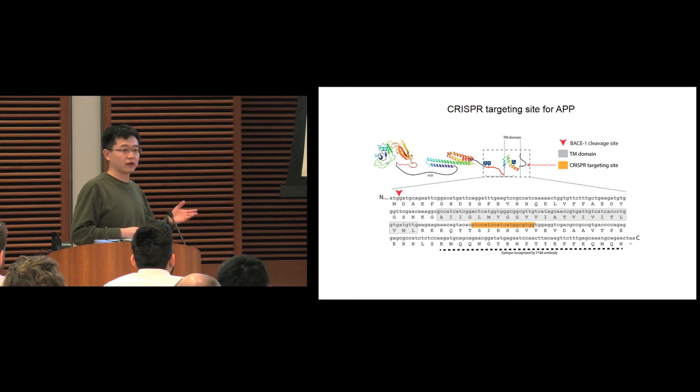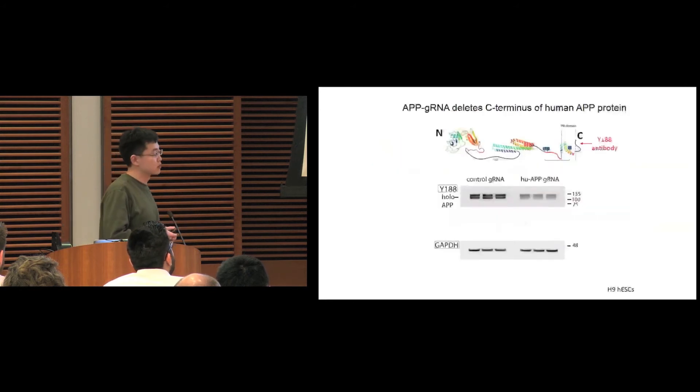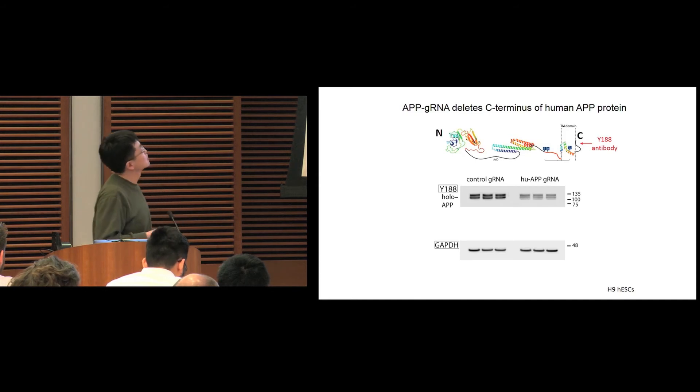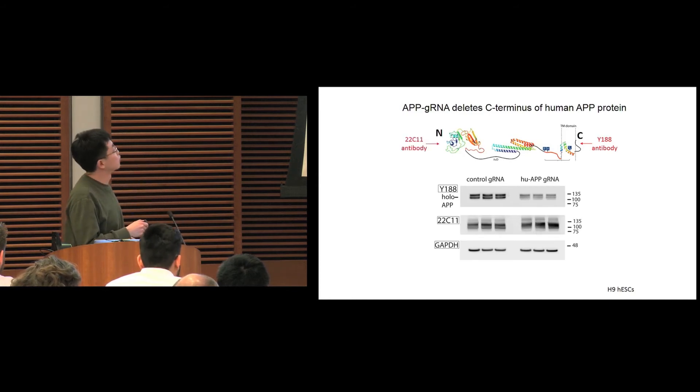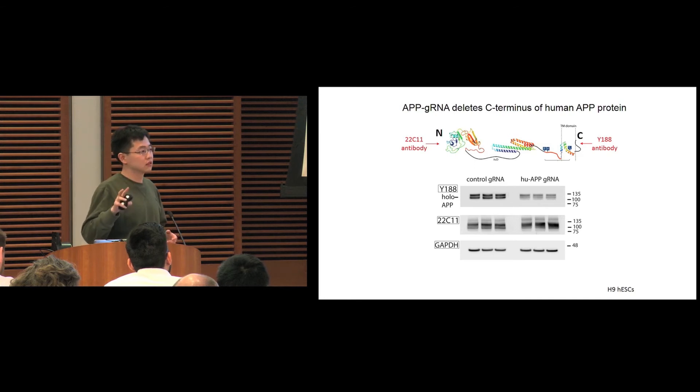First, we look at human embryonic stem cells, and we found with CRISPR expression, the Y188 signal is largely reduced compared to control cells. However, if we blot the protein with the N-terminal antibody 22C11, you can see the protein still can be expressed, suggesting that CRISPR only cut off a short C-terminal but preserved the entire N-terminal.